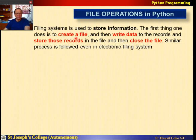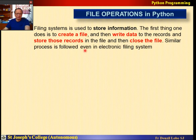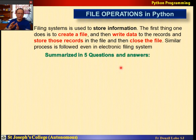The first thing one does is to create a file — take a blank folder and name that folder. Once you have named the folder, you take papers and write data to it. For example, in a college they will write the student number, student name, address, and all the information. Then we store these records in the file and close the file. I am going to summarize this whole chapter in five to six questions and answers, and then we will do a little practice with some problems.